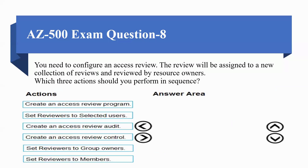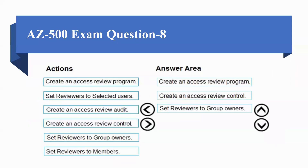You need to configure an access review. The review will be assigned to a new collection of reviewers and reviewed by the resource owner. Which three actions should you perform in sequence? The correct sequence is: 1) Create an access review program; 2) Create an access review control; 3) Set reviewer to group owners.